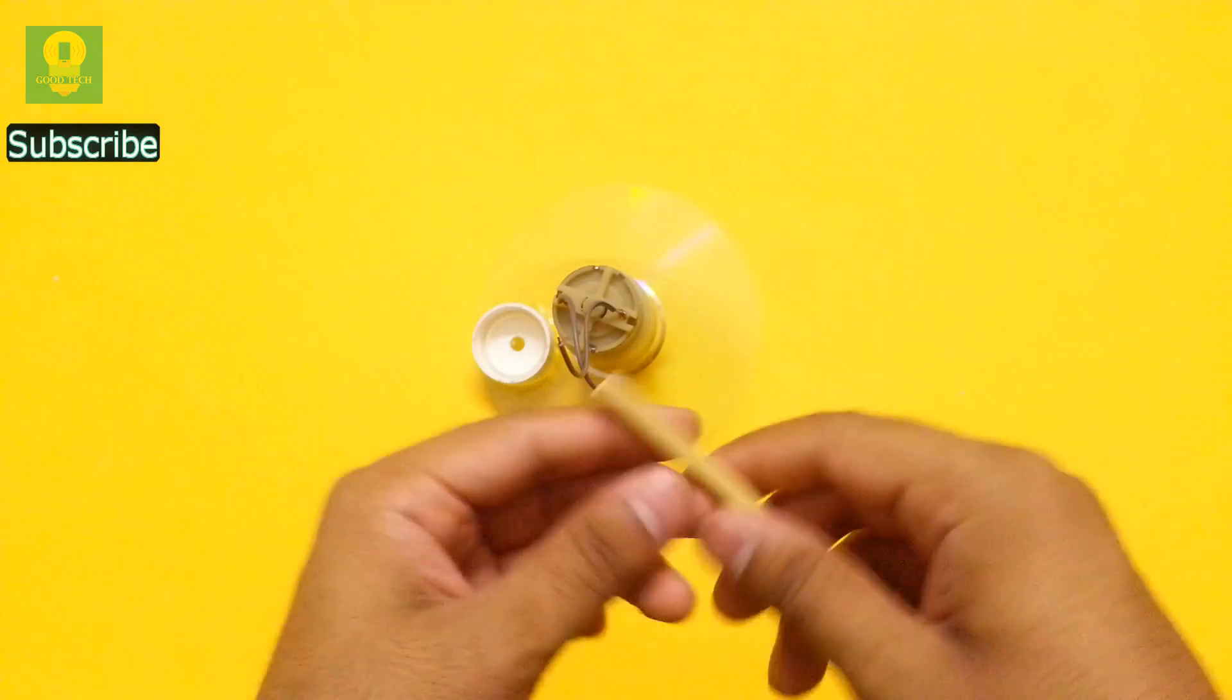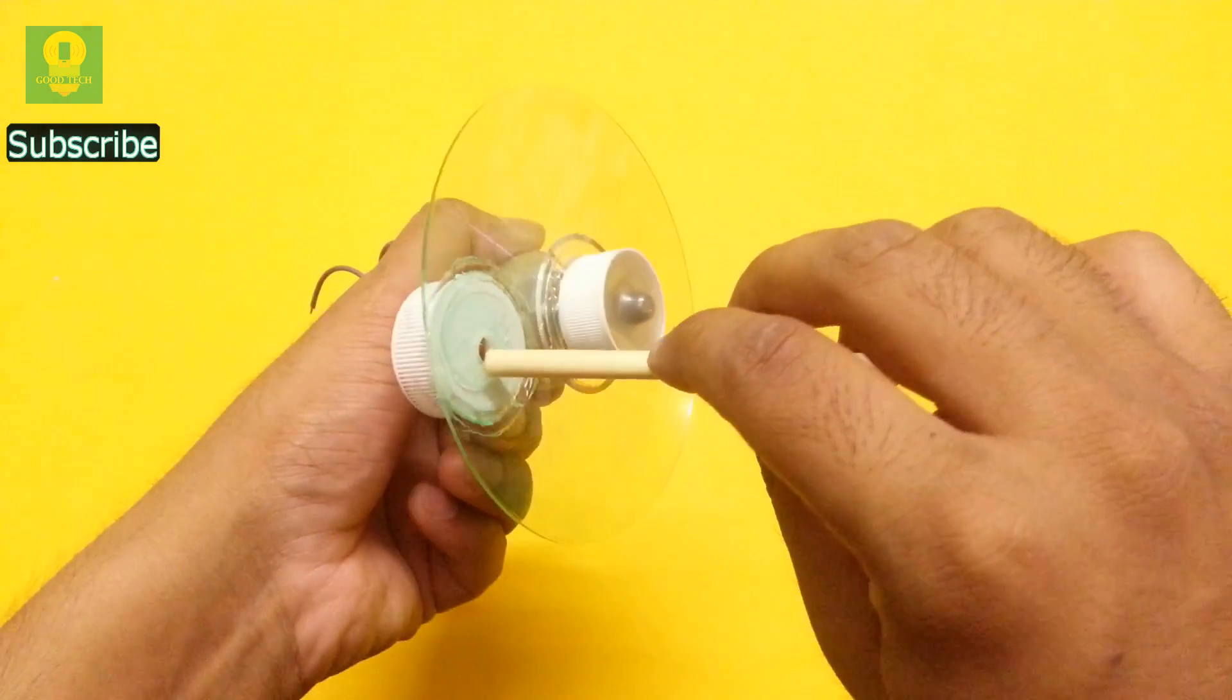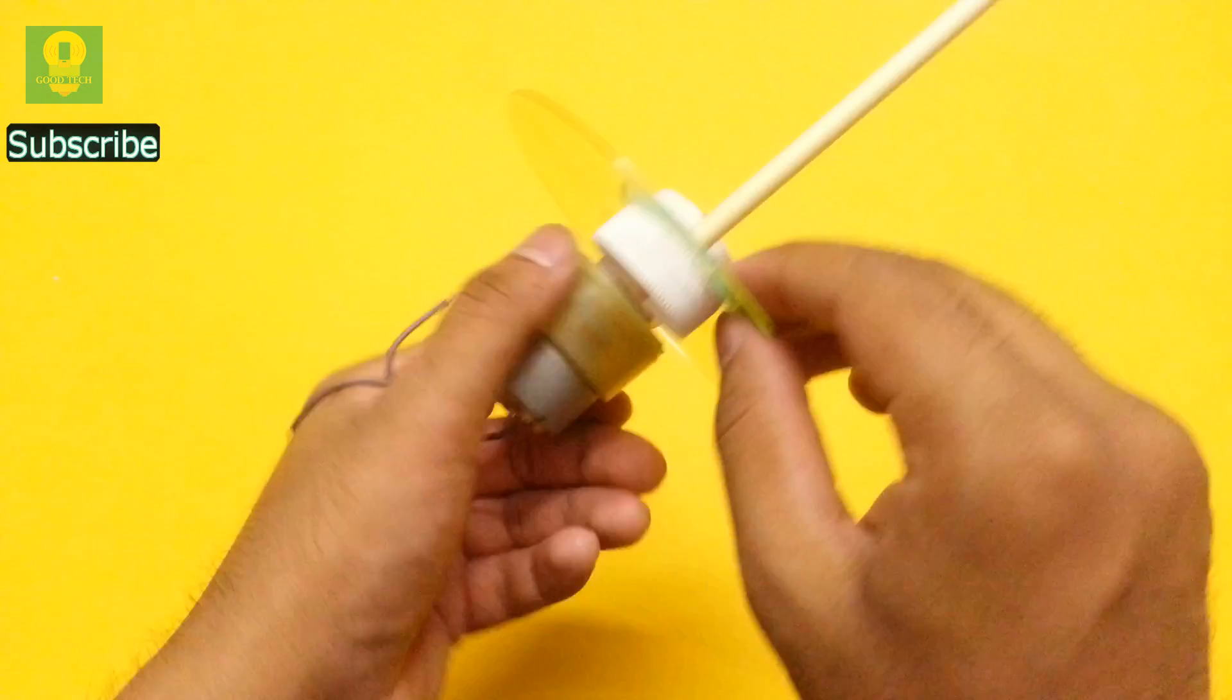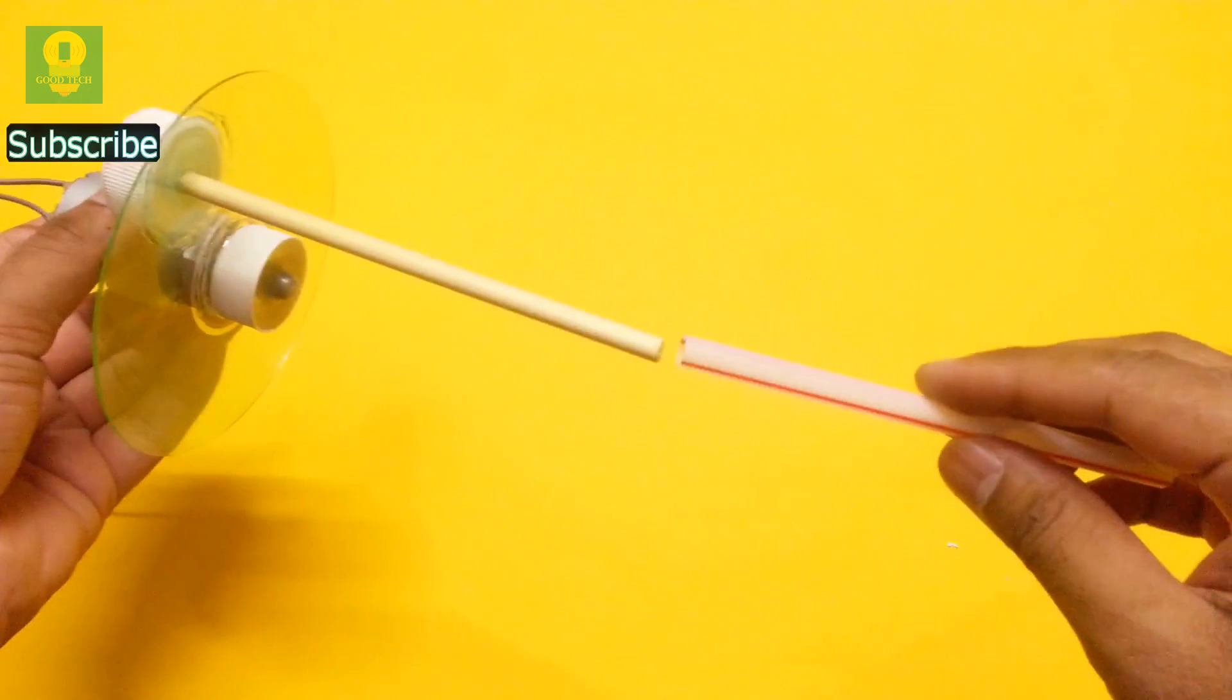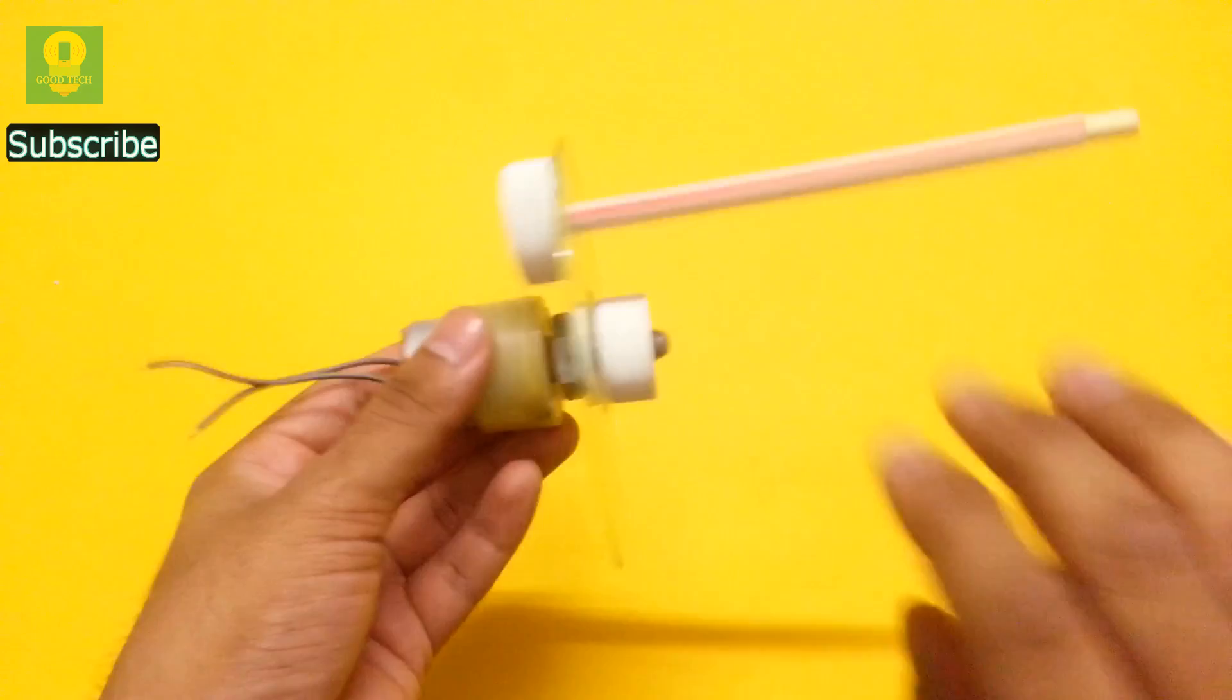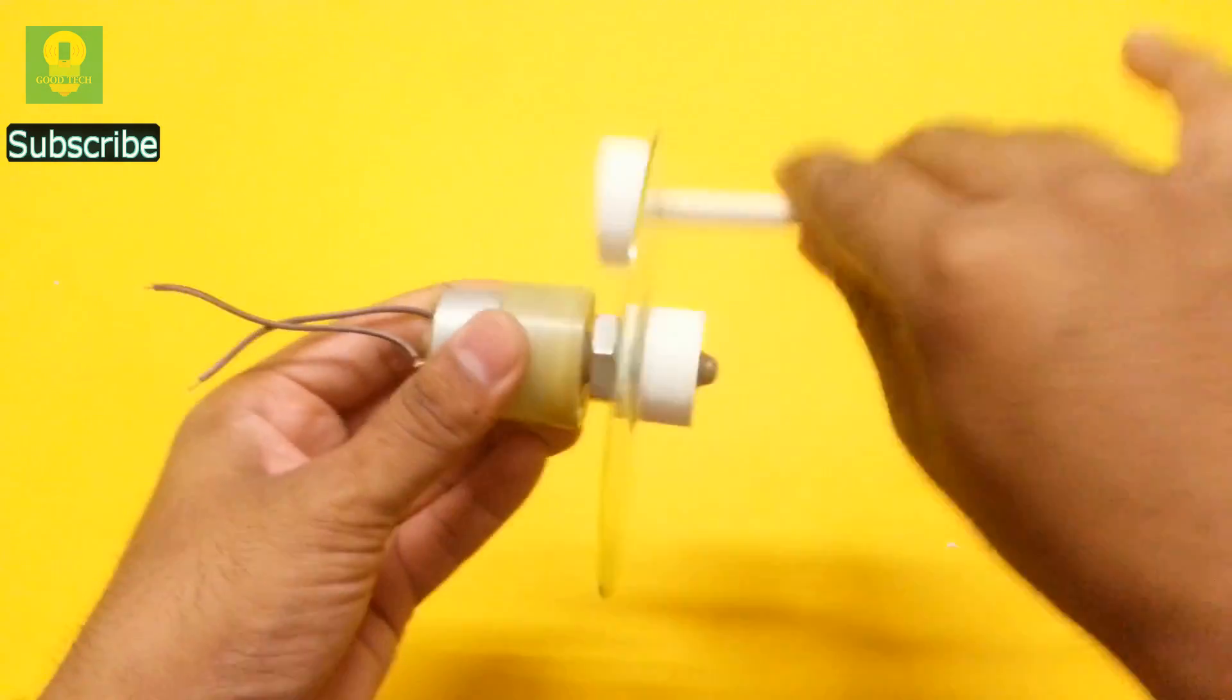Take a wooden stick of about 15 cm in length. Insert the stick in the other hole and secure it using hot glue. Insert a straw over the wooden stick. This will act as the handle to rotate the motor shaft.